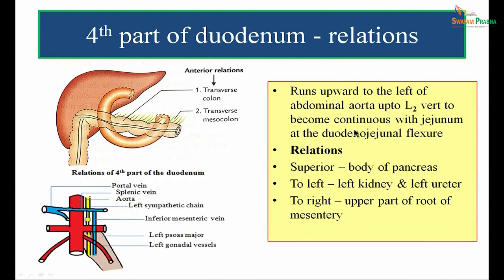The fourth part of the duodenum runs upwards to the left of the abdominal aorta up to the level of L2 vertebra to become continuous with the jejunum at the duodeno-jejunal flexure. Anteriorly — transverse colon and transverse mesocolon; posteriorly — left sympathetic chain, inferior mesenteric vein, left psoas major, and left gonadal vessels; superiorly — body of pancreas; to the left — left kidney and left ureter; to the right — upper part of the root of mesentery.